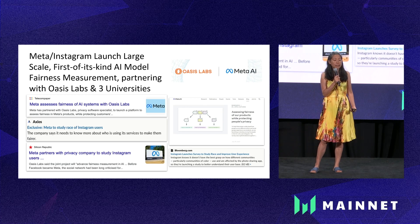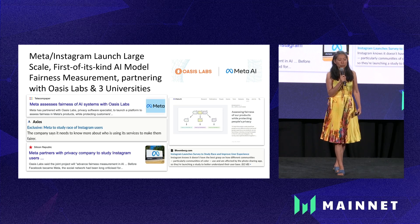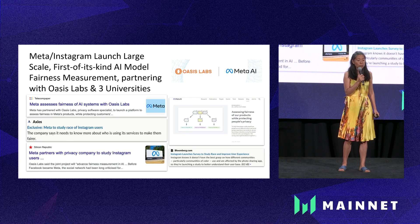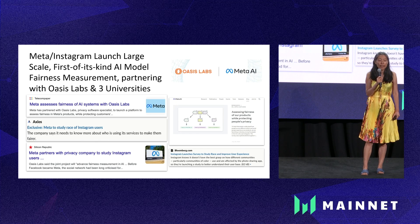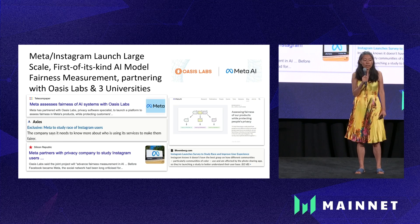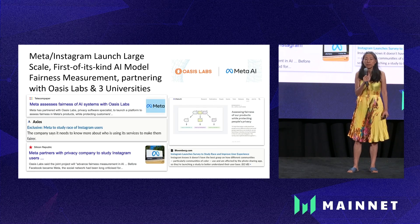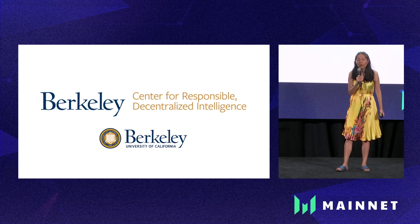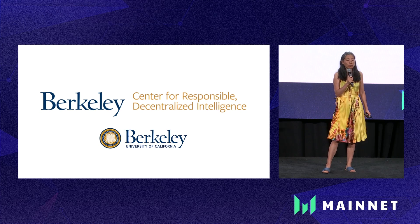As another example of taking research innovation into real-world practice, Oasis Labs recently announced a partnership with Meta, where we develop privacy technologies and enable the first-of-its-kind large-scale AI model fairness measurements while protecting users' privacy. These are examples of how we can take research innovation and bring it into the real world.